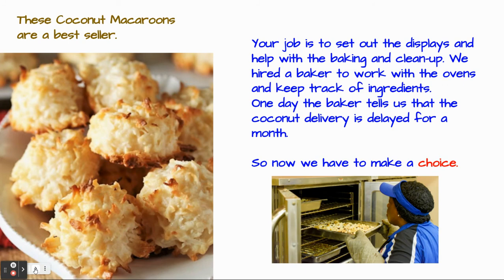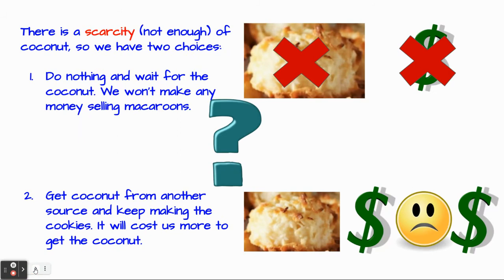Your job at the sweet shop is to set out the displays and help with the baking and the cleanup. We hired a baker to do the oven stuff and keep track of all the ingredients. One day the baker tells us that the coconut delivery is delayed for a month, so now we have to make a choice. Because there is scarcity — there is not enough coconut — we have two choices. We can do nothing, wait for the coconut, and we won't make any money because we can't sell the macaroons.